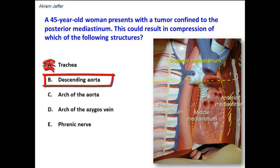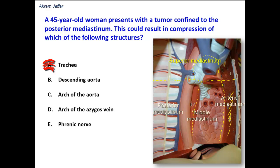Descending aorta. Yes, this is the descending aorta as you can see here. The aorta starts as an ascending aorta from the middle mediastinum, then forms the arch of the aorta located in the superior mediastinum, and then the descending aorta descends downwards into the posterior mediastinum and leaves the thorax behind the diaphragm at the level of T12 vertebra. So the descending thoracic aorta is likely to be compressed by a tumor confined to the posterior mediastinum.